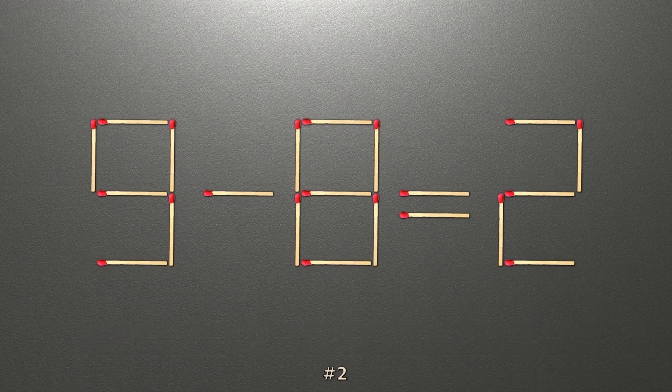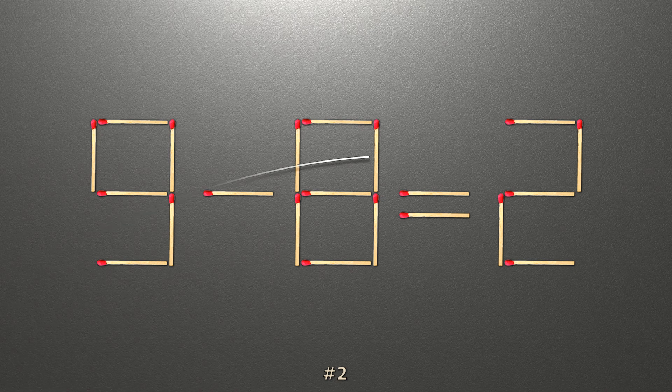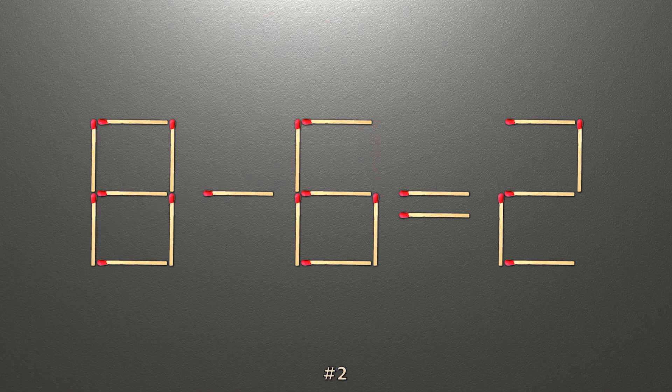To do this, all we need to do is move this match right here. Now, when we check the condition, 8 minus 6 is 2, and 2 equals 2. Now our equality is correct.